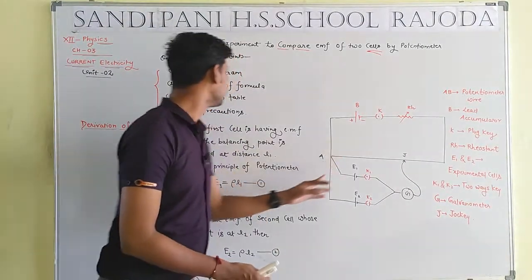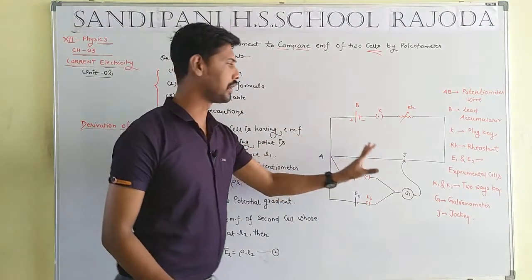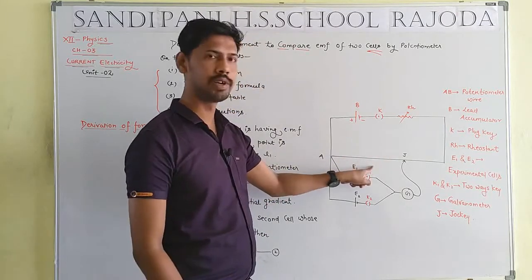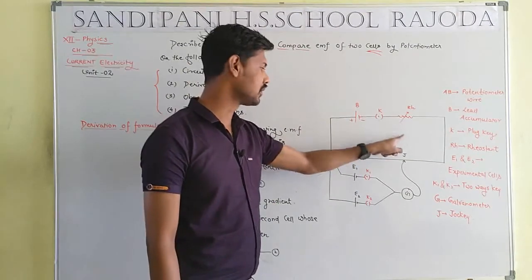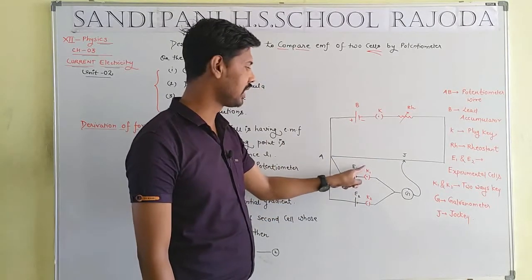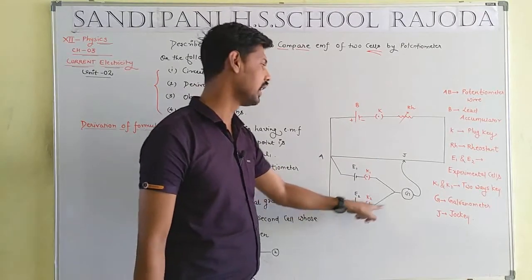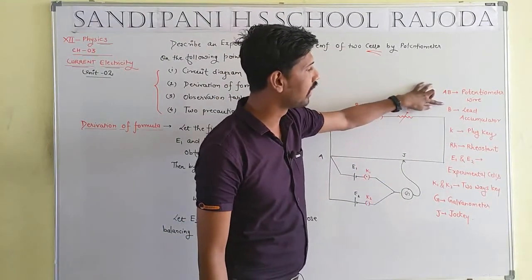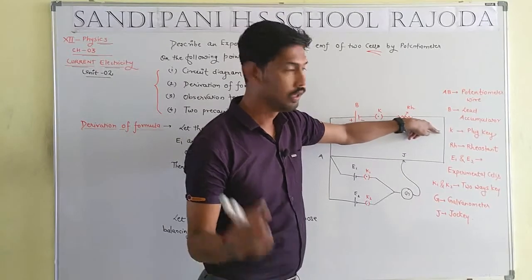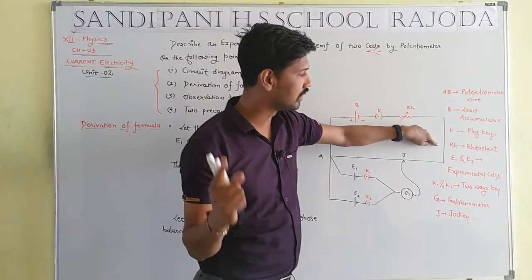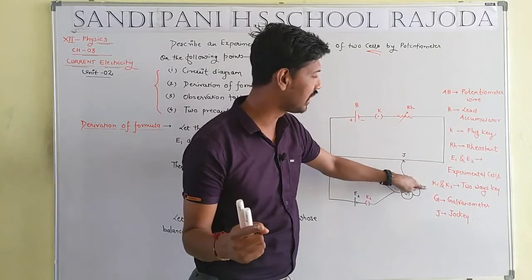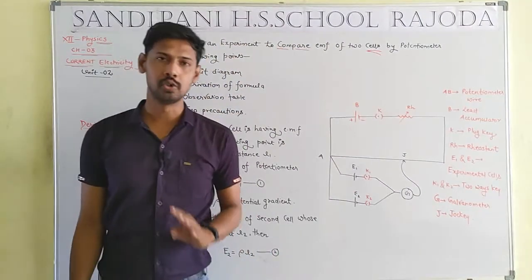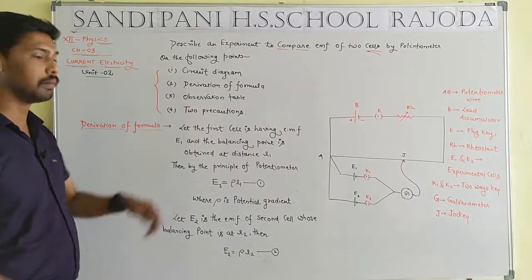In the first topic — circuit diagram — we make a circuit diagram which consists of: potentiometer wire AB, lead accumulator, key, resistance, experimental cells E1 and E2, two-way keys K1 and K2, galvanometer G, and jockey J.